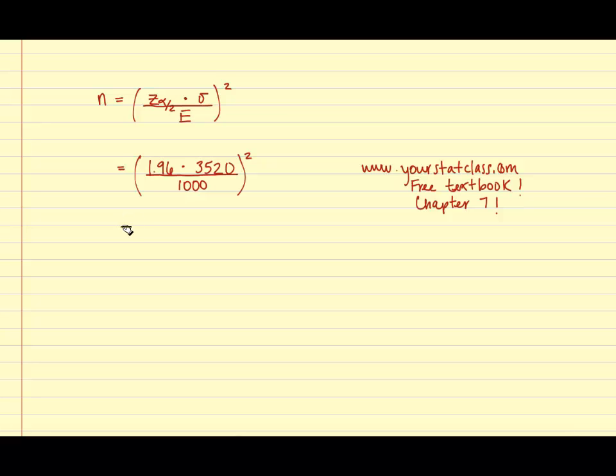If we simplify the numerator and take 1.96 times 3520, we obtain 6899.2 divided by 1,000 in the denominator.